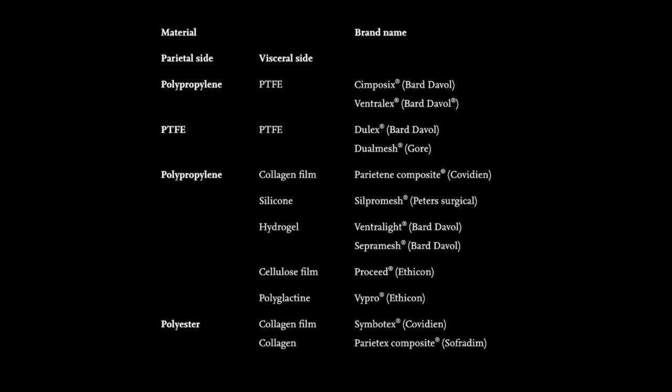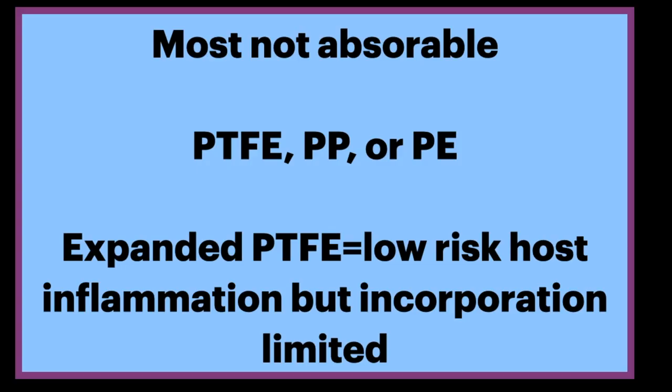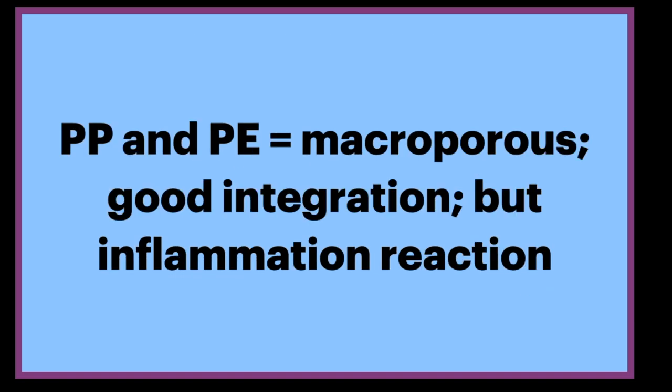PTFE stands for polytetrafluoroethylene. Most meshes are not absorbable; they are made of either expanded PTFE, PP or polypropylene, or PE polyester. Expanded PTFE is a microporous synthetic material used intraperitoneally due to a low risk of host inflammation reaction, but incorporation into the abdominal wall is limited. PP and PE are macroporous meshes that allow good integration in the abdominal wall by colonization of the prosthesis by host collagen fibers, but with an important inflammation reaction.